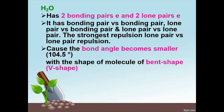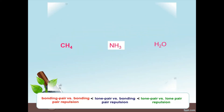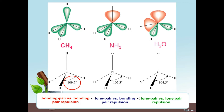H2O has 2 bonding pairs and 2 lone pairs of electrons. It has 3 types of repulsion forces, and the strongest is lone pair versus lone pair repulsion, making the bond angle even smaller at 104.5 degrees, with the shape being V-shaped. Water's lone pair versus lone pair repulsion pushes the bonding pairs downward, resulting in the smallest angle of 104.5 degrees.